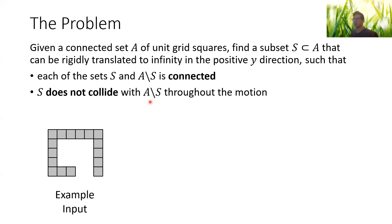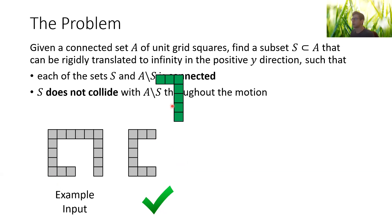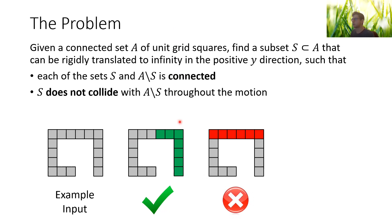I will provide formal definitions soon, but just for an example: if we have this input here, this would be a valid solution. The green squares, because we can move them up without any collision with the complement, and each of the sets here are connected.